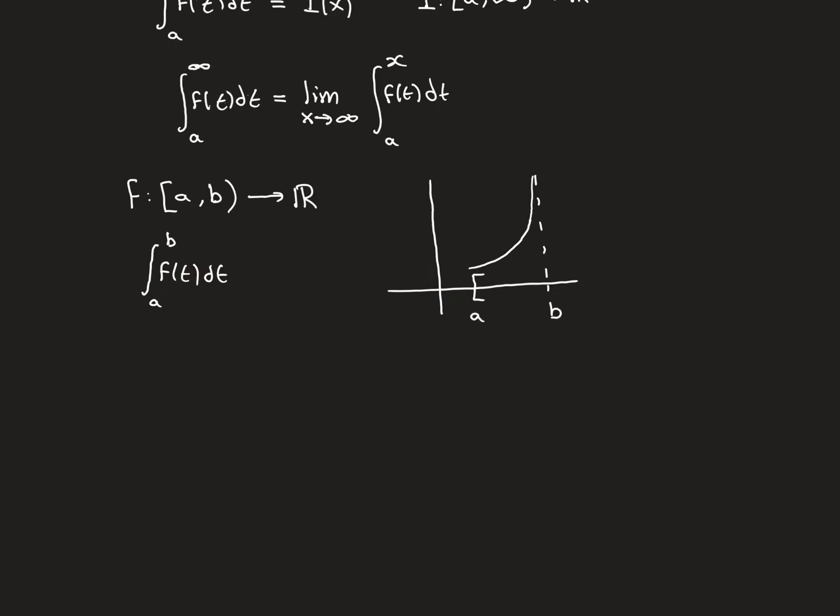Now let's move on to the second type of improper integral. In the first type we considered when it is sensible to define integration to infinity, where the domain is unbounded. In this second type we think about when it is sensible to define the integral of an unbounded function over a bounded interval — so the domain is bounded but the codomain is unbounded.